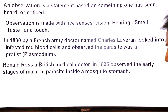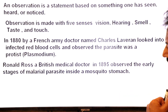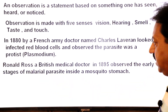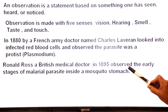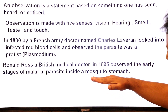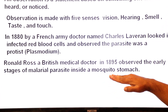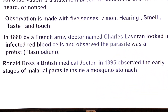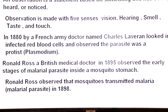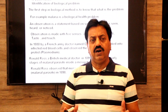The connection between malaria and mosquitoes was observed by Ronald Ross, a British medical doctor. In 1895 he observed the early stages of the malaria parasite inside a mosquito's stomach — specifically the Anopheles mosquito's stomach — linking malaria to the female mosquito. Ronald Ross observed that mosquitoes transmitted the malarial parasite, confirmed in 1898. So the first step, observation, has been covered.